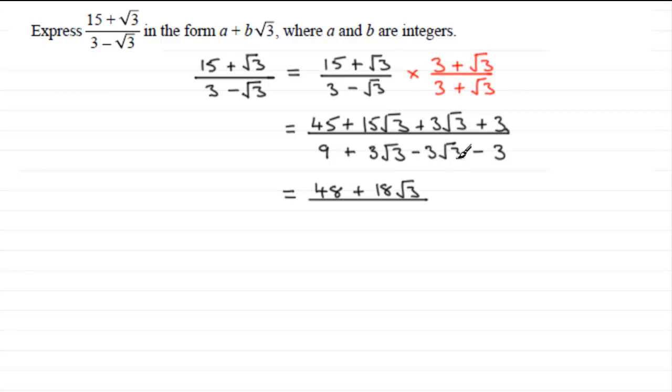These cancel one another out - that's because we changed the sign here - and now we've just got 9 minus 3 which is 6. We're nearly there now. We've got to get this in the form a + b√3. At the moment we've just got one term, so we've got to divide the 6 into each of these two terms.